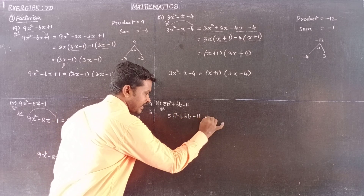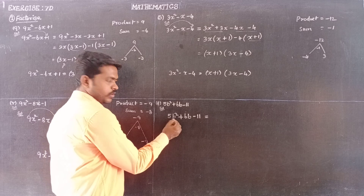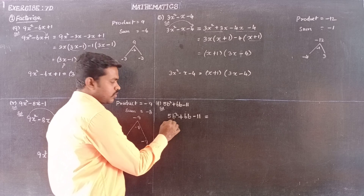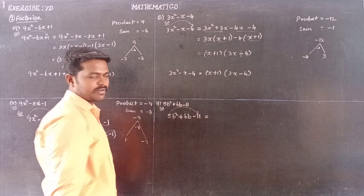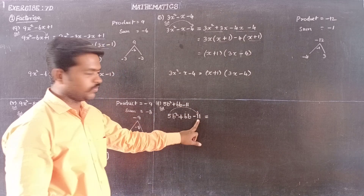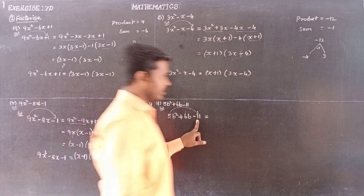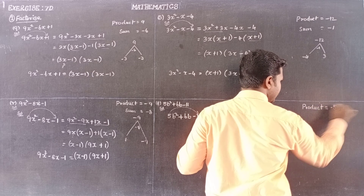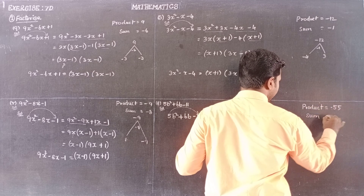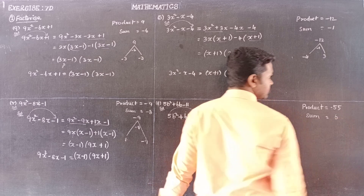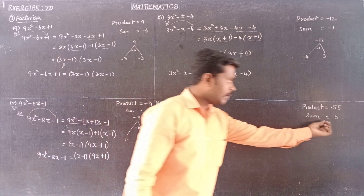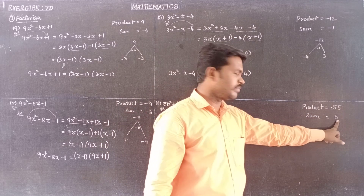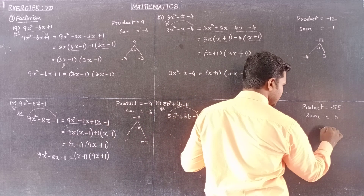The next subdivision is 5b squared plus 6b minus 11. The product of the two numbers equals 5 times minus 11, which is minus 55, and their sum must equal plus 6, the coefficient of b.